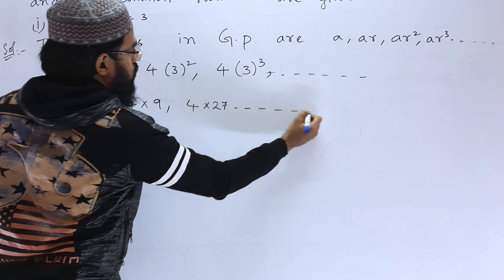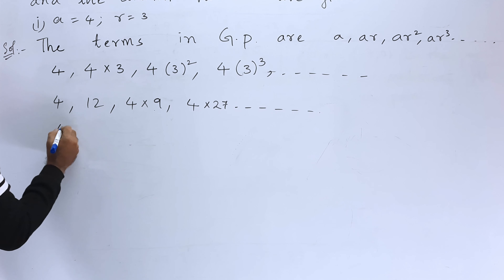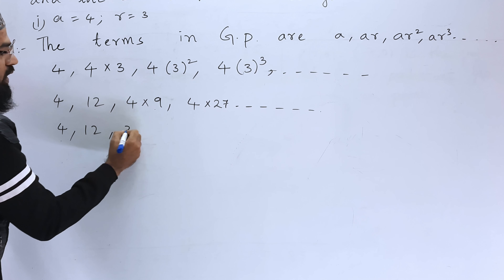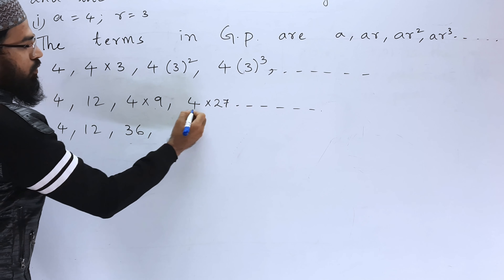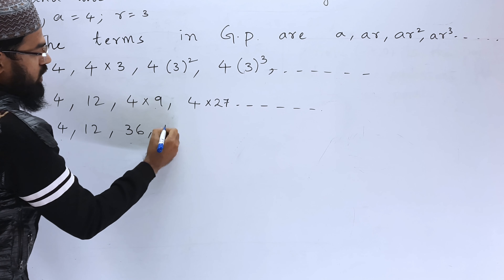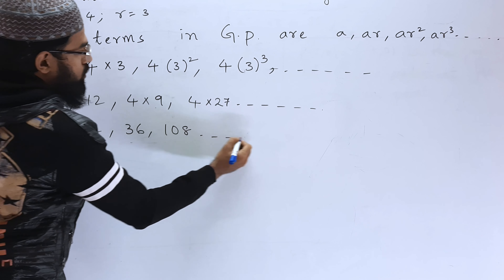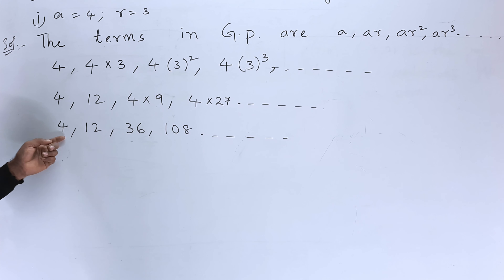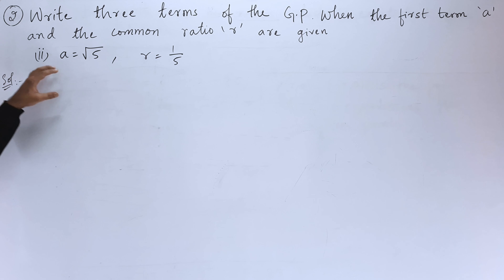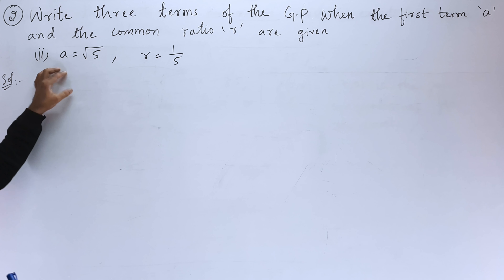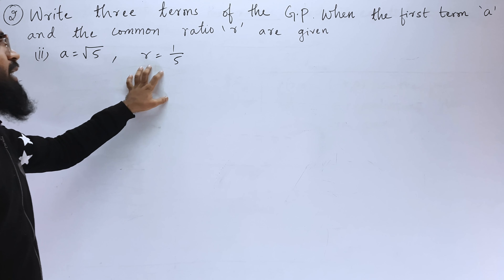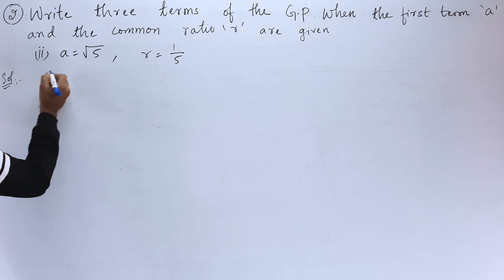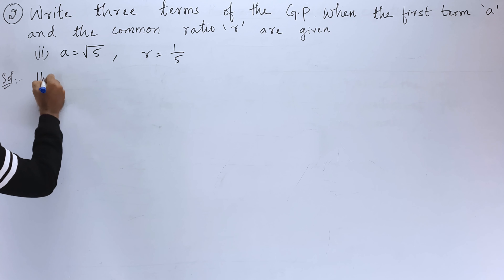So the first term is 4. The second term is 4 into 3, which is 12. The third term is 4 into 3 squared: 3 squared is 9, so 4 into 9 is 36. Then 4 into 3 cubed: 3 cubed is 27, so 4 into 27 is 108, and so on. These are the terms: 4, 12, 36, 108...